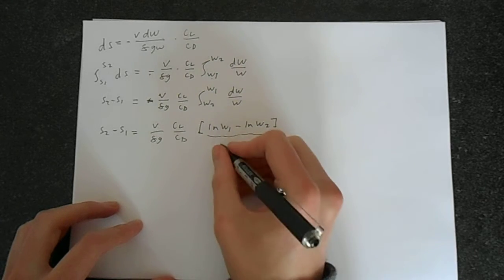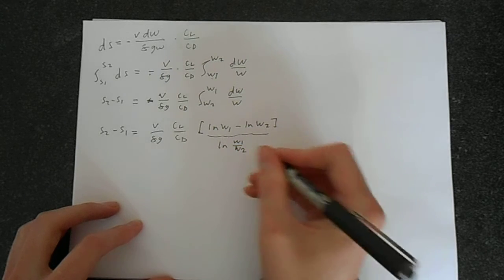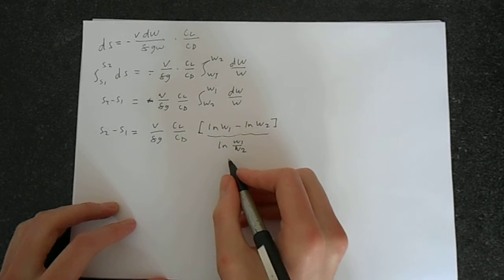...comes out as natural logarithm W_1 minus natural logarithm of W_2. This, of course, is ln(W_1 divided by W_2). This is just the rules with logarithms.